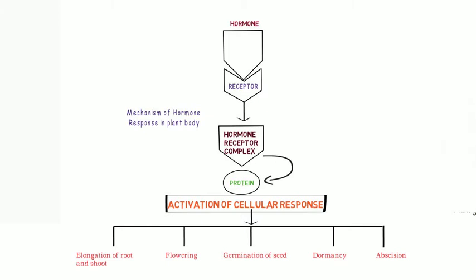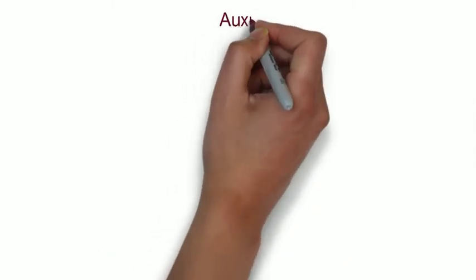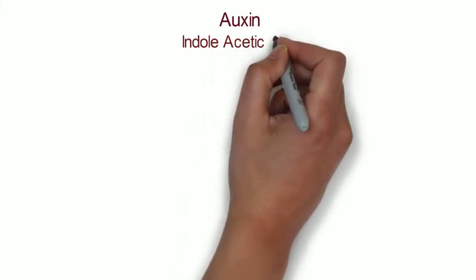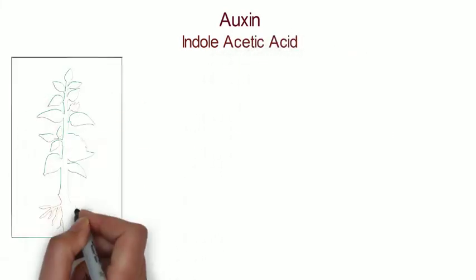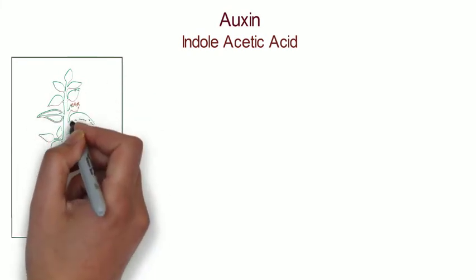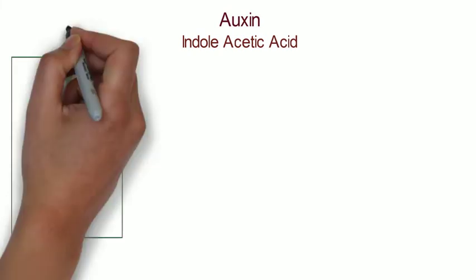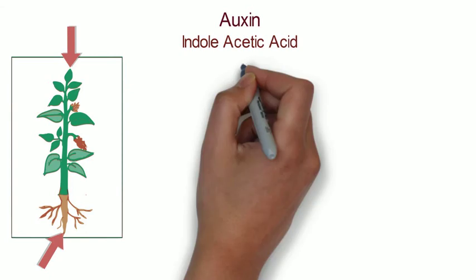In this video we will discuss five major plant hormones. Besides their names and functions, we will also explore some interesting mechanisms of their actions. Let us start with auxin. Auxin is also known as indole acetic acid and is mainly responsible for growth and developmental processes. It is normally found at the tip of the root and shoot, that is, the apical meristem.